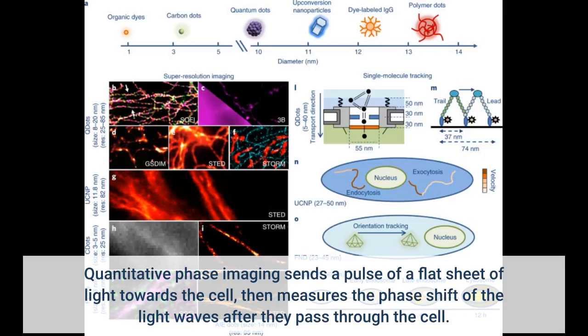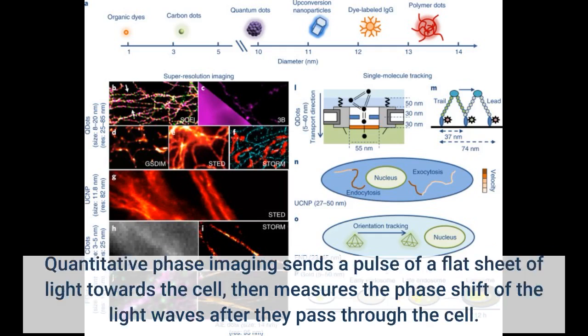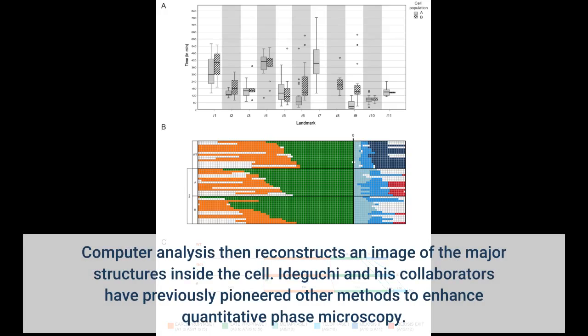Quantitative phase imaging sends a pulse of a flat sheet of light towards the cell, then measures the phase shift of the light waves after they pass through the cell. Computer analysis then reconstructs an image of the major structures inside the cell.